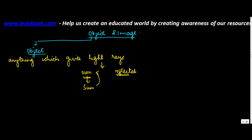So let's say something like a Sun which has the light rays of its own, and the other one could be a Moon which does not have the light of its own but reflects the light from the Sun. So anything which gives out light rays is called an object.